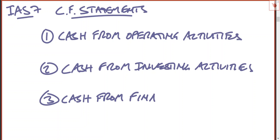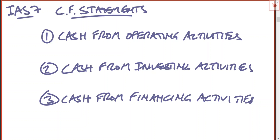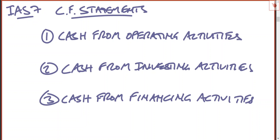What this is trying to show is what the cash flows of the entity are in a particular year — what was the cash from operating activities, what was the cash from investing activities, and what was the cash from financing activities. Each of these is pretty straightforward.